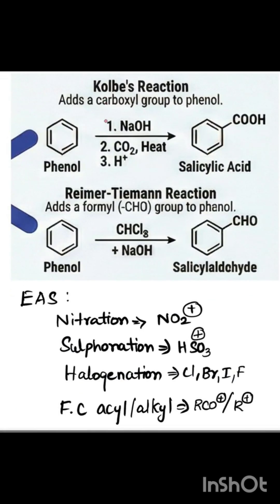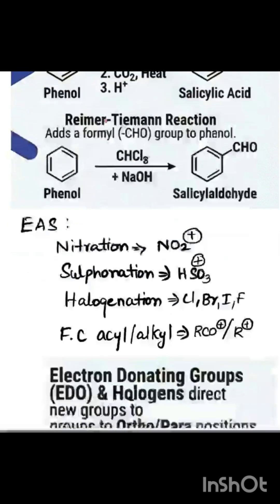The next category is Kolbe's reaction and Reimer-Tiemann reaction. Both start with phenol. Kolbe's reaction uses CO2 with NaOH to give salicylic acid. Reimer-Tiemann uses chloroform with NaOH to form salicylaldehyde.